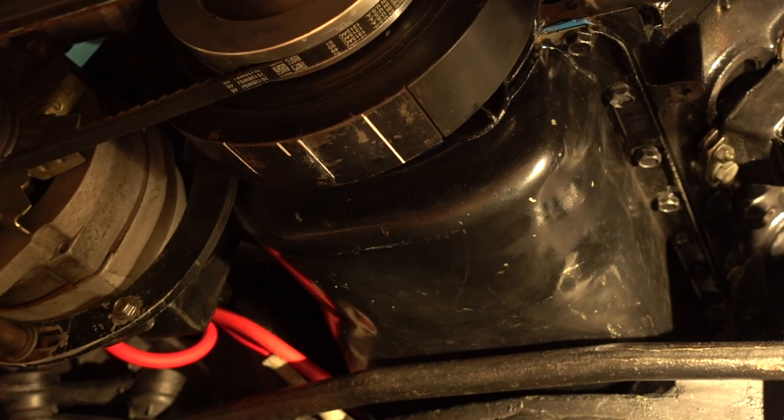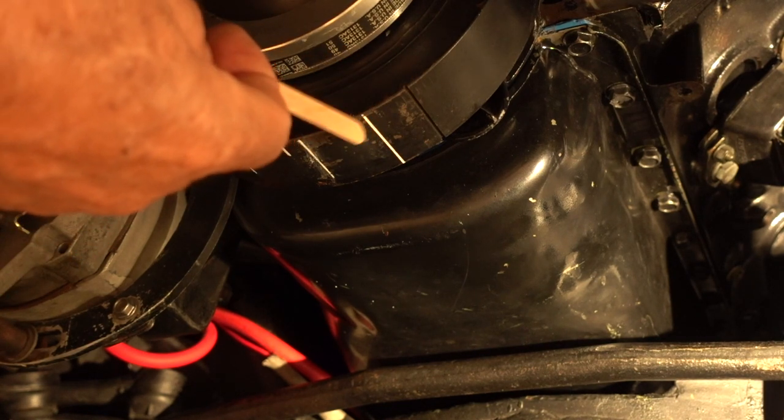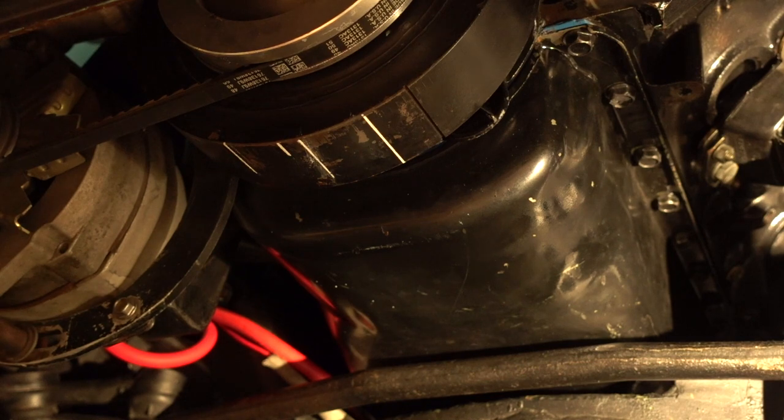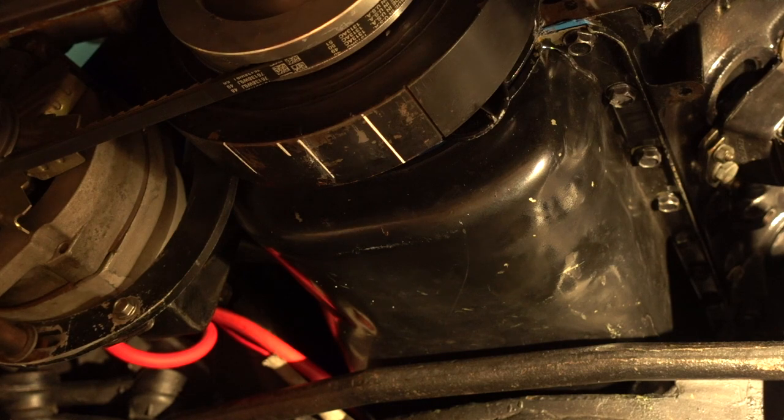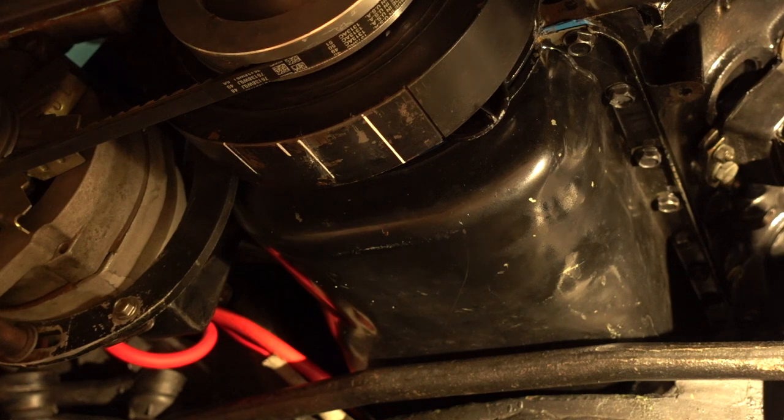But those are the marks on the balancer, and if you bring this 12 degree mark up to the pointer on the compression stroke, then the rotor will be pointing to number one spark plug. And I've got a special distributor cap that I've cut a window in, and you can line up the rotor with a mark on that cap. I'll show that to you now.